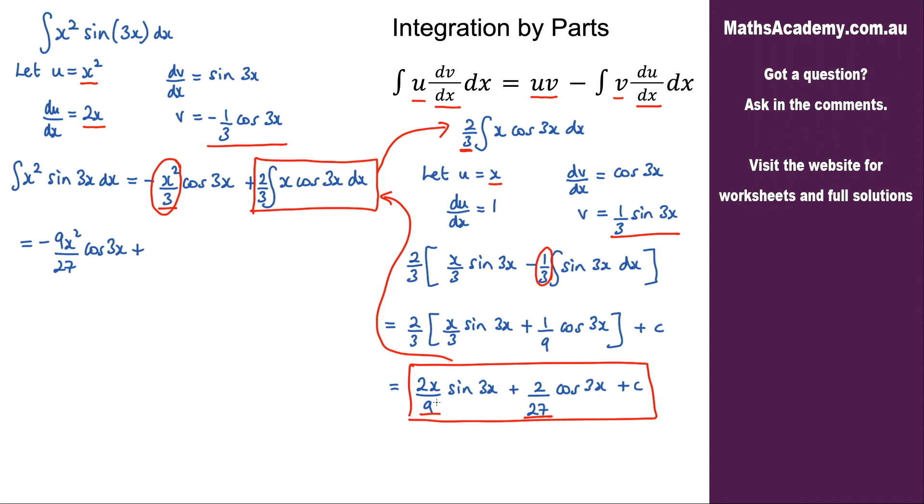This term I want in terms of 27ths, so I'll multiply by 3 over 3. I get 6x over 27 sine of 3x plus 2 over 27 cosine of 3x plus the constant of integration.